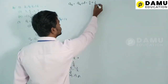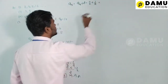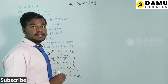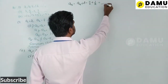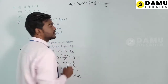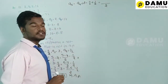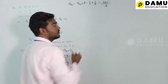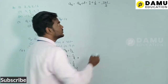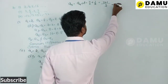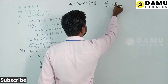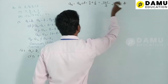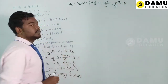Taking LCM 2: (7 + 1)/2 = 8/2 = 4. So a5 = 4.